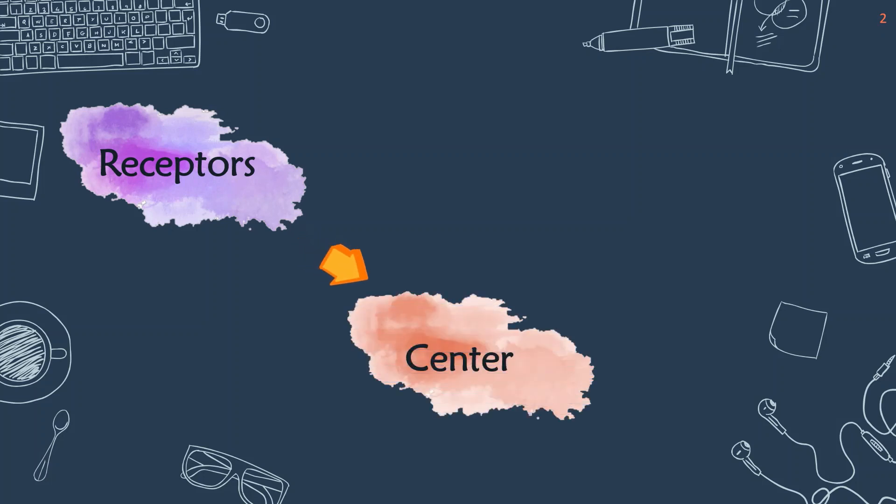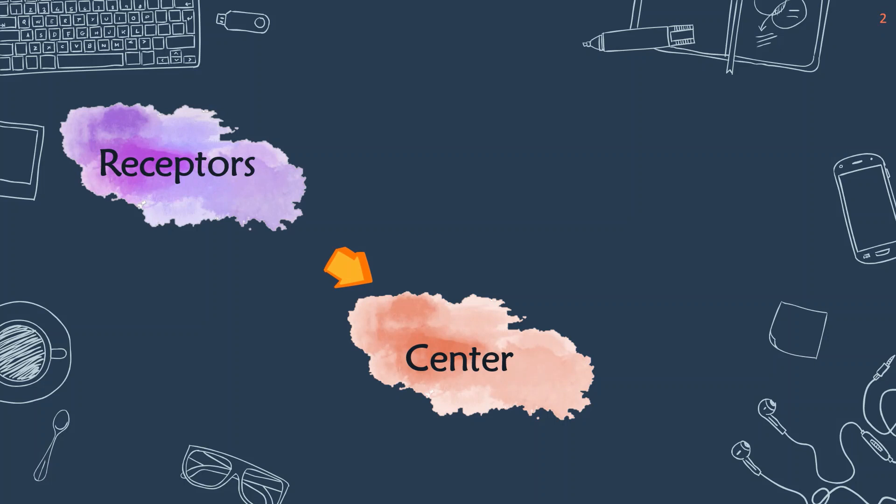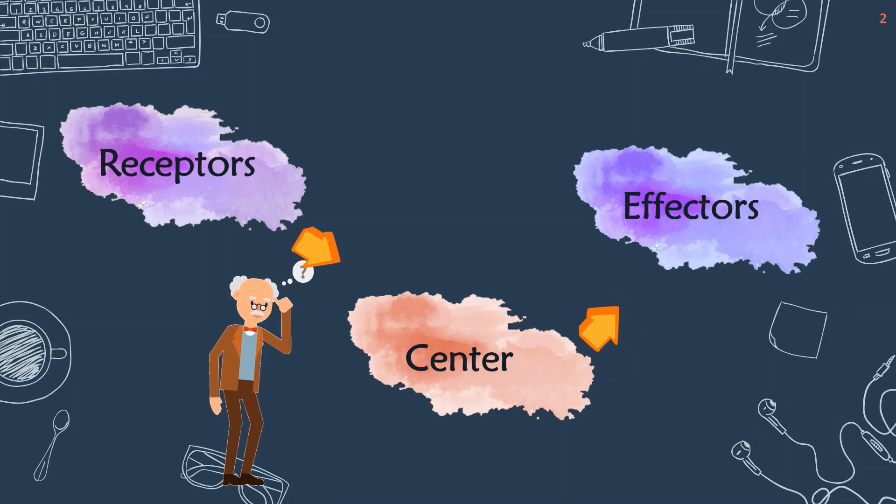Impulses are transmitted to the center that consists of our central nervous system. The central nervous system will translate the impulse and transmit it to the effector, such as our muscles and glands, to carry out the action.